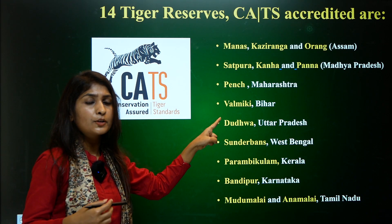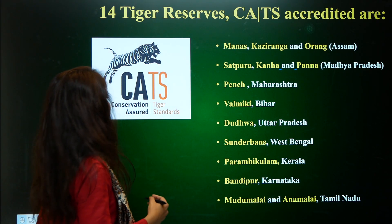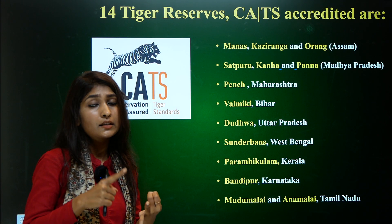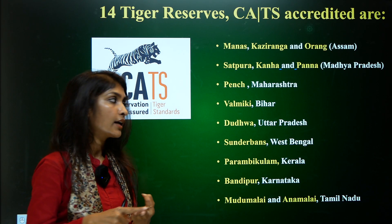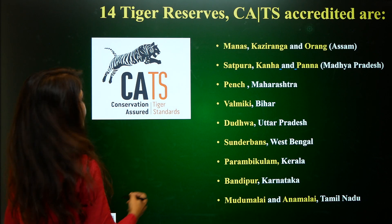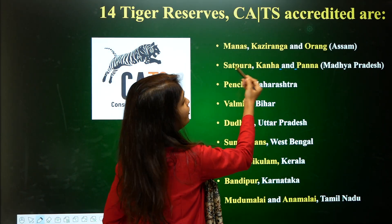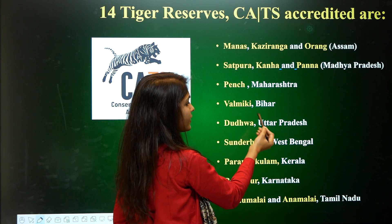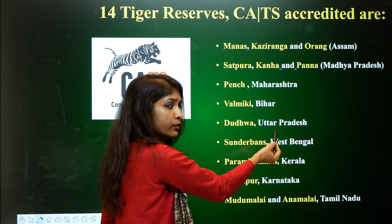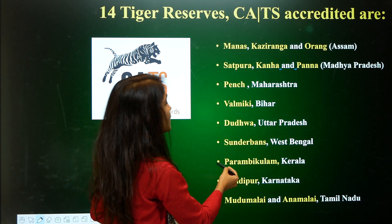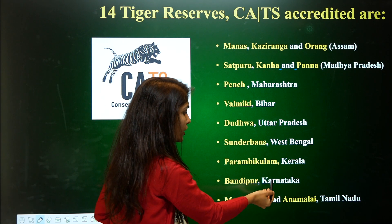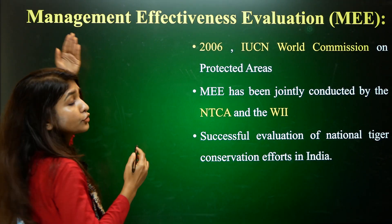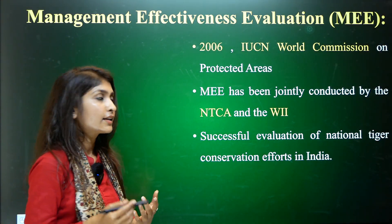The 14 CATS-accredited tiger reserves include: Manas, Kaziranga, and Orang in Assam; Satpura, Kanha, and Panna in Madhya Pradesh; Pench in Maharashtra; Valmiki in Bihar; Dudhwa in Uttar Pradesh; Sundarbans in West Bengal; Parambikulam in Kerala; Bandipur in Karnataka; and Mudumalai and Anaimalai in Tamil Nadu.